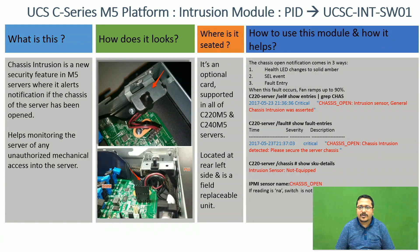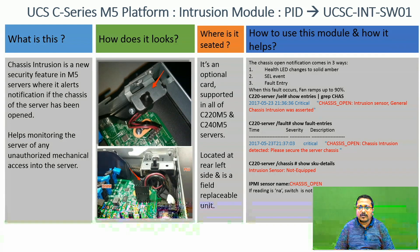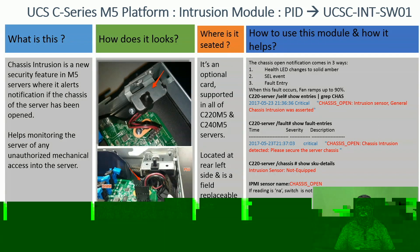How to use this module? Whenever there is an intrusion on the server, it will send a notification in three ways. First, the Health LED of the server will become amber. Second, there will be a SEL event entry and a fault entry will be raised. When this fault occurs, the fan starts running at 90%. In the SEL entry, you will see the notification as chassis_open intrusion sensor asserted.